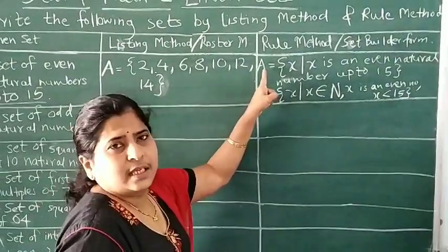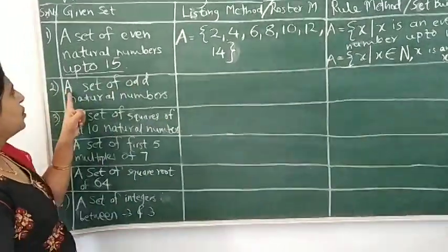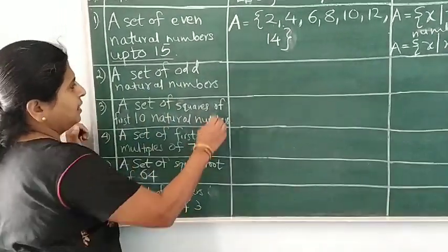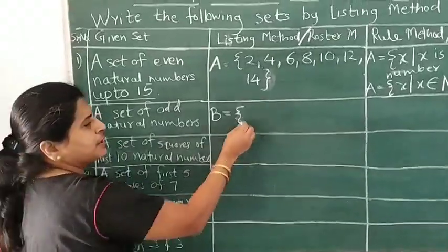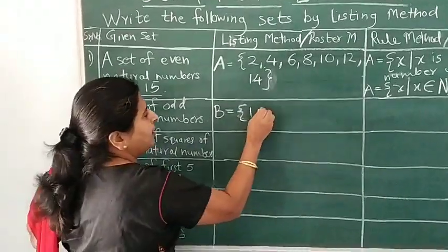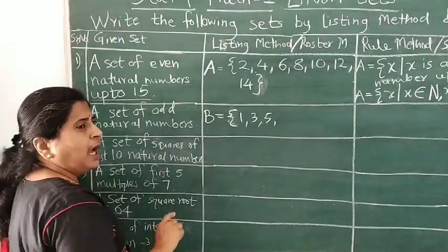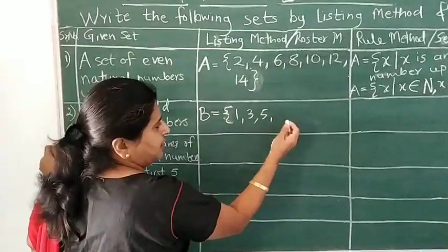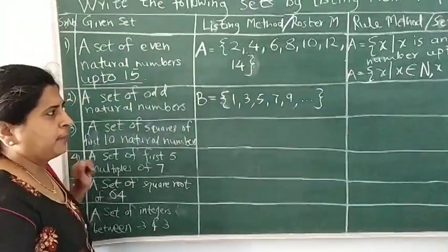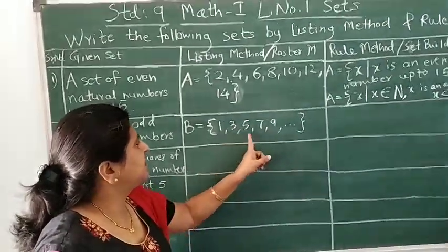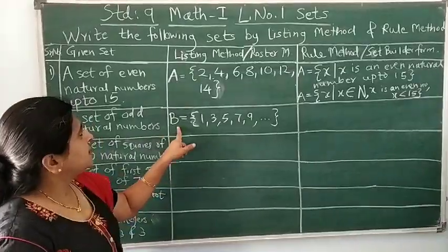You will find one method easier, but you should know the symbolic method also, because if it is given in the question we should be able to understand. Now let's go to another example: a set of odd natural numbers. No name is given, so we say set B. Opening curly bracket. Odd numbers are not divisible by 2 and start with 1, 3, 5. How many do we want? No upper limit is given, so we want all odd natural numbers. We write 1, 3, 5, 7, 9, then put a comma, three dots, and close the bracket. The three dots show there is no upper limit — it is infinite. This is by the listing method.